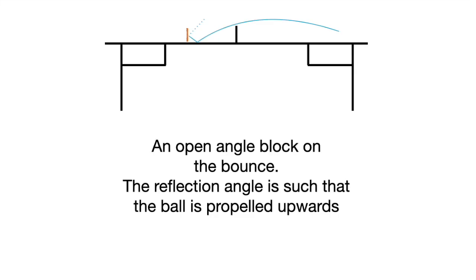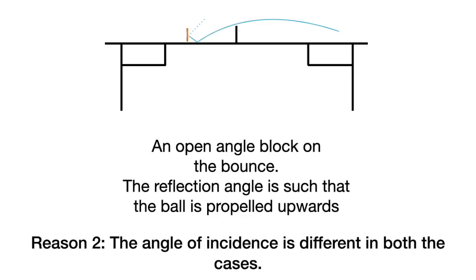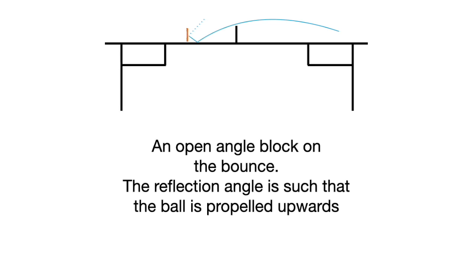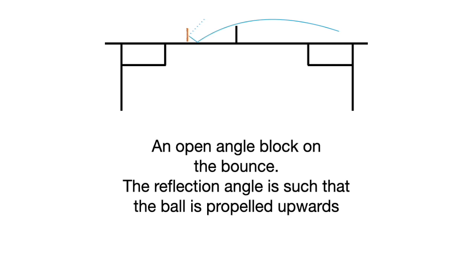Reason 2: the angle of incidence is also different in both cases. Even if you ignore the topspin, in the first case the ball is rising, and hence the angle of incidence is such that there's a natural tendency for the ball to fly up. In Fan's case, he takes the ball after its highest peak when it's falling down, and the angle of incidence is drastically different.